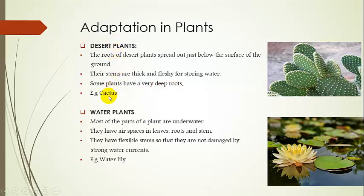The example of the desert plant is the cactus. As you see here, the spines on the surface of the stem and leaves of the cacti prevent water loss.